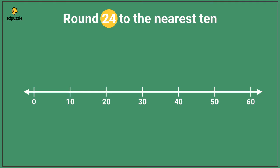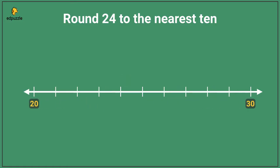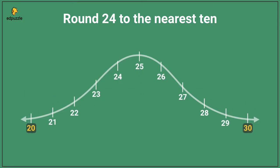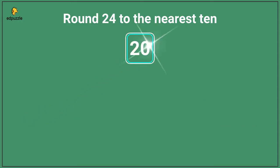I can see that twenty-four — it's more than ten, more than twenty, but it's less than thirty. It's somewhere in the middle of twenty and thirty. Let's zoom in on our number line so that we are only looking at the numbers between twenty and thirty. Imagine this number line as a hill. I'm rounding the number twenty-four, so I'm going to put the ball right there at twenty-four. If the ball is at twenty-four, which way will it roll? You can imagine that the ball would roll down to twenty. So twenty-four rounded to the nearest ten is twenty.